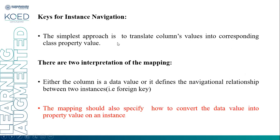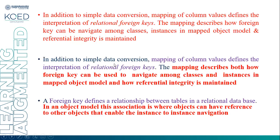Keys for navigation: the simplest approach is to translate the column's value into a corresponding class property value. There are two interpretations of the mapping — either the column is a data value, or it defines a navigation relationship between two classes. The mapping should also specify how to convert the data value into a property on an instance. In addition to simple data conversion, the mapping of the column defines the interpretation of relational foreign keys.